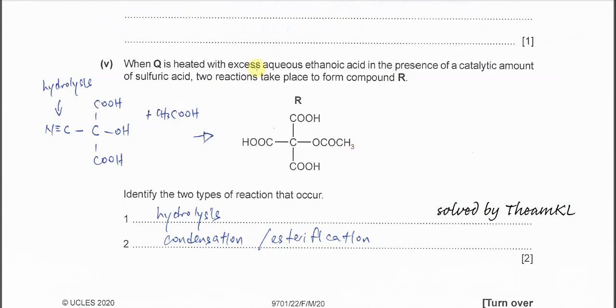Part 5: When Q is heated with excess aqueous acid in the presence of a catalyst, which is H2SO4, two reactions take place to form R. For Q, this one is Q. If it undergoes first, it will undergo hydrolysis here and another one is going to happen here - esterification. The carboxylic acid, the ethanoic acid, is going to react with this alcohol group to form this ester. So you'll form two different groups now. Form ester here and form carboxylic acid. This carboxylic acid is from the hydrolysis of the nitrile and this ester is from the condensation or esterification reaction.